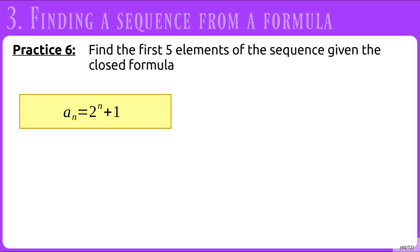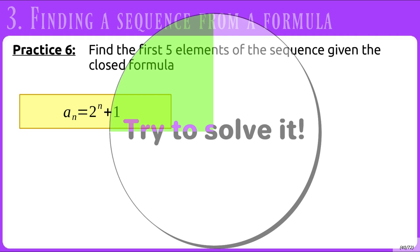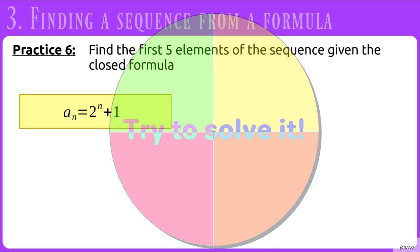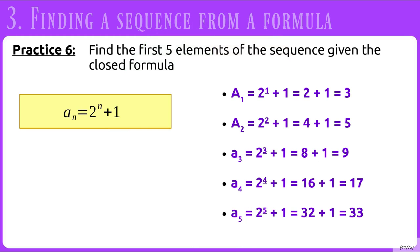One more practice: find the first 5 elements given the closed formula a sub n equals 2 to the n plus 1. If you're familiar with powers of 2, you might recognize 1, 2, 4, 8, 16, 32. But here we've offset it by 1, so we have 3, 5, 9, 17, and 33.